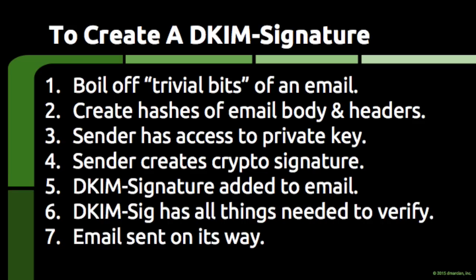Step 3: The server has already been configured with a cryptographic key that is one half of a key pair. This part of the key pair is called the private key. The server can create signatures that can be verified by anyone who has access to the other half of the key pair, which is called the public key. Step 4: The server creates a cryptographic signature that covers the email. This is actually performed in a two-step process that is quite clever, but unnecessary to go into during this overview.